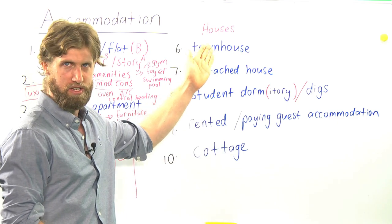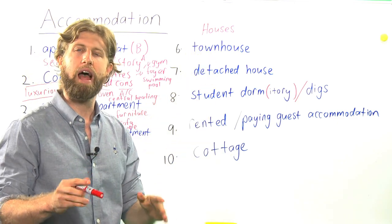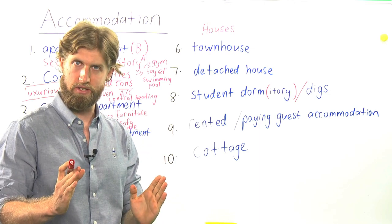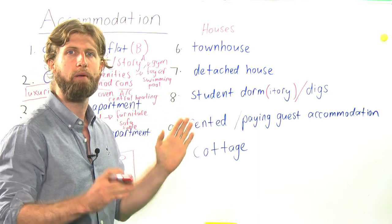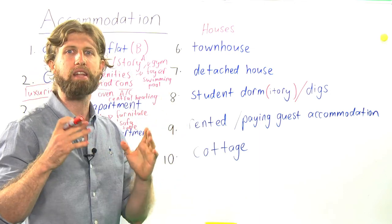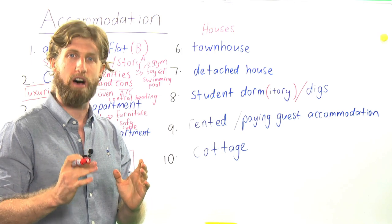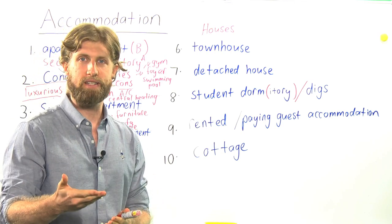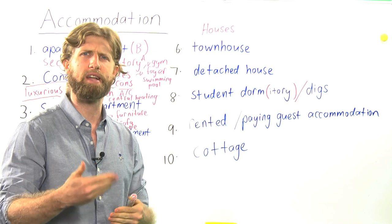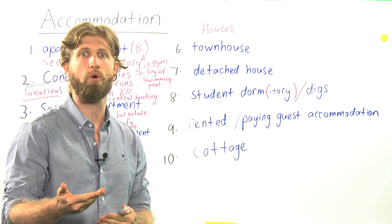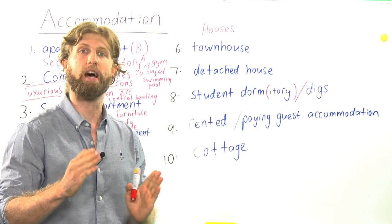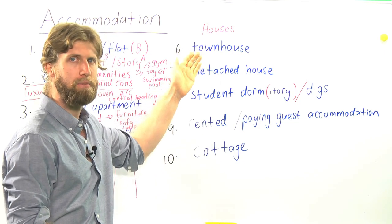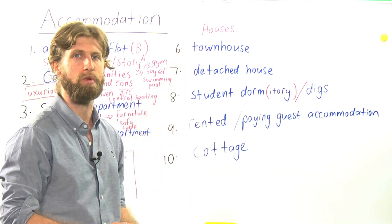Now, moving on to houses. As you will remember, houses are their own separate buildings, while apartments are buildings or rooms inside of other buildings. Just be sure to say: I am renting an apartment, I am renting a house, or I have bought a house. Here are examples of the different kinds of houses we can find.